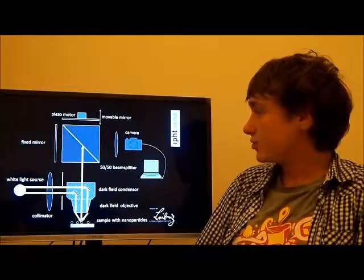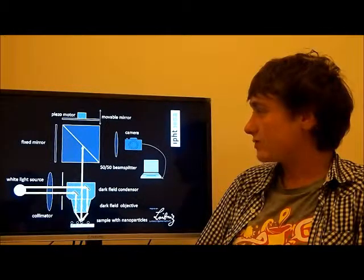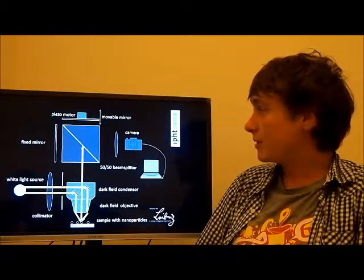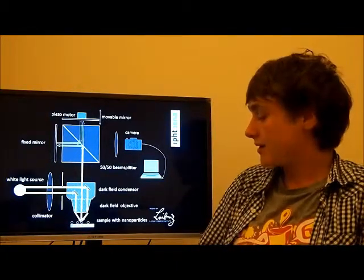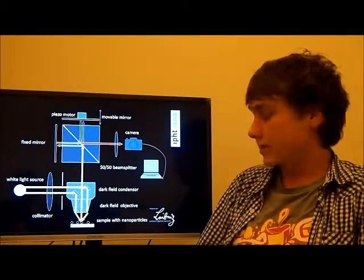Here it is split into two parts, one is sent into the fixed mirror and one to the movable mirror. It is reflected there and recombined at the beam splitter again and then led to a camera.